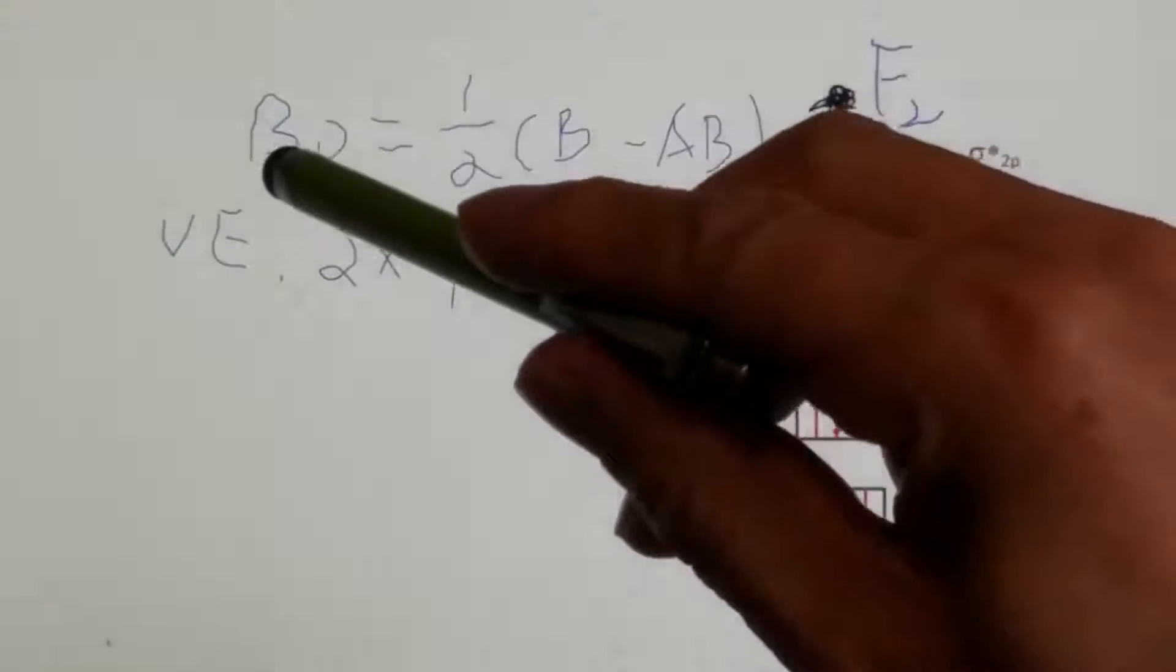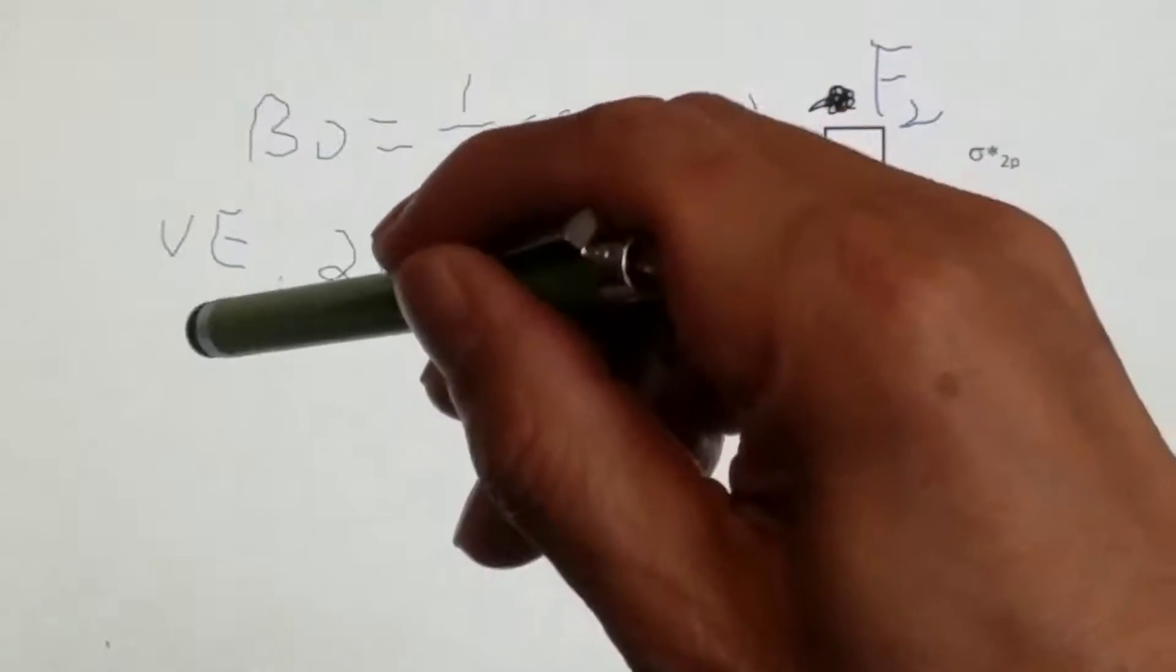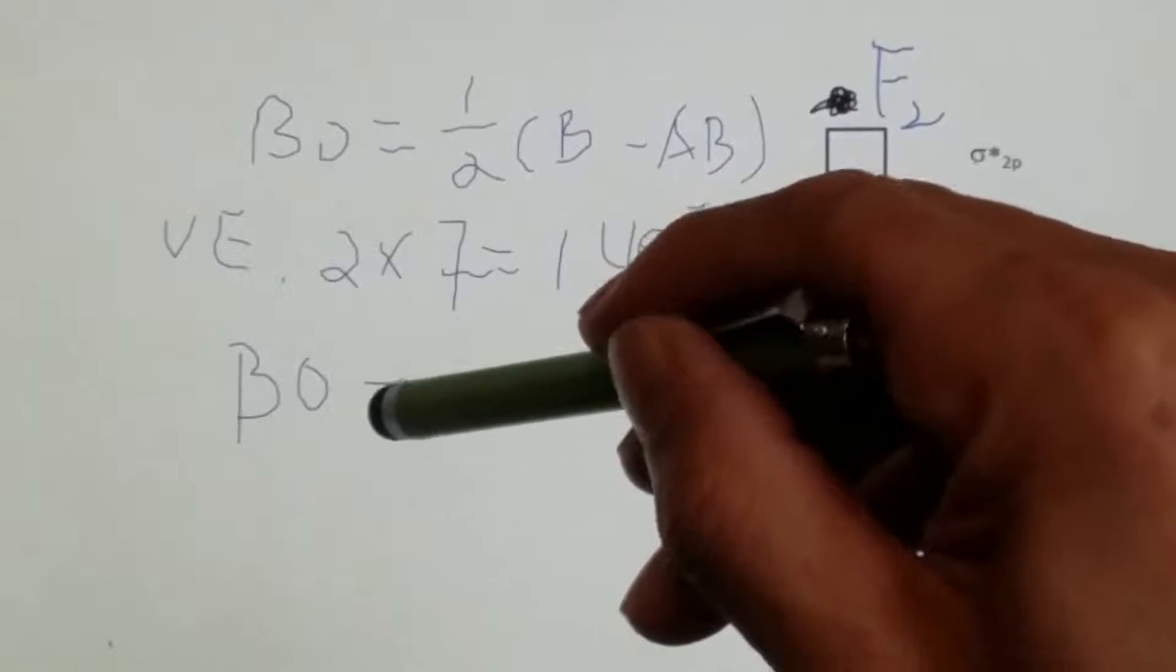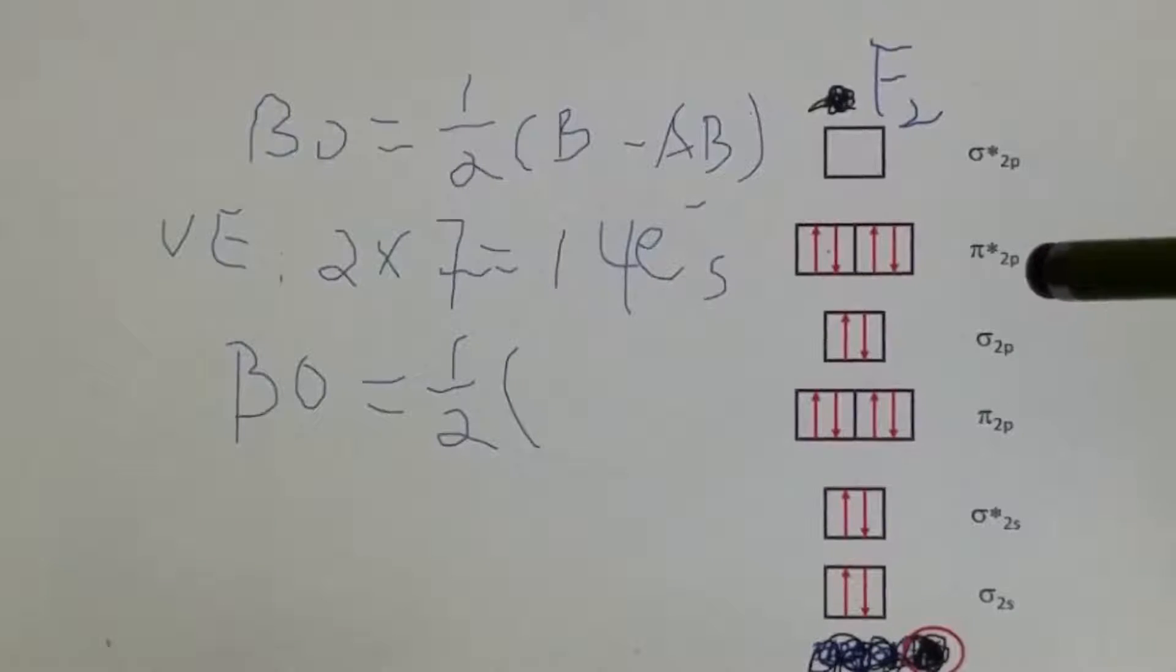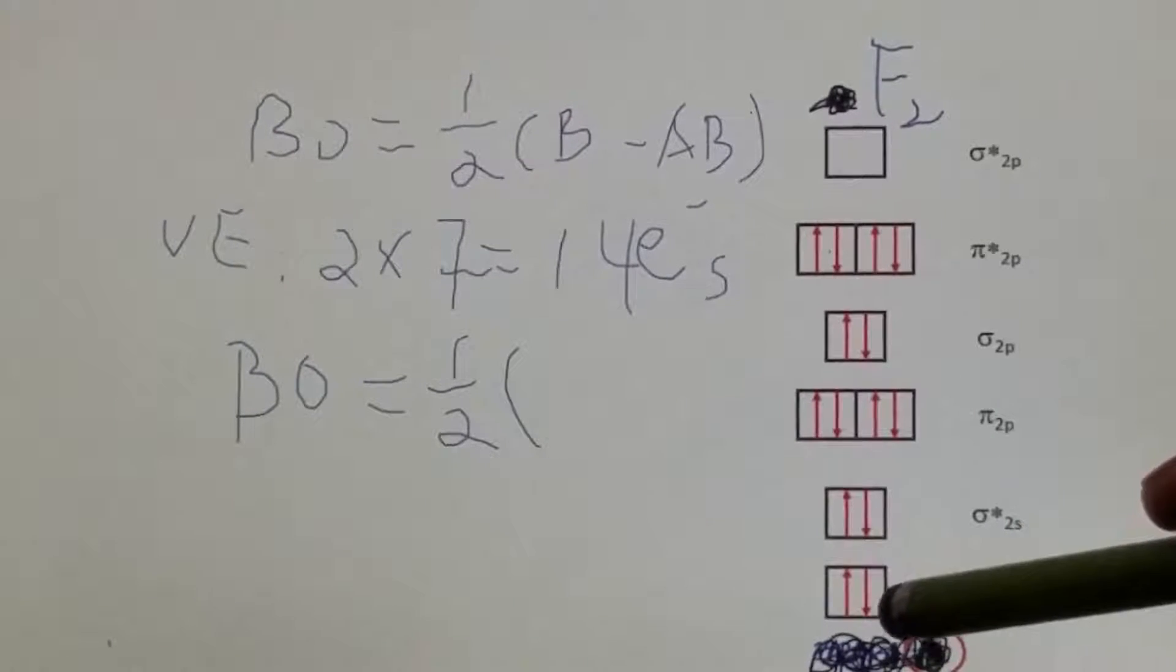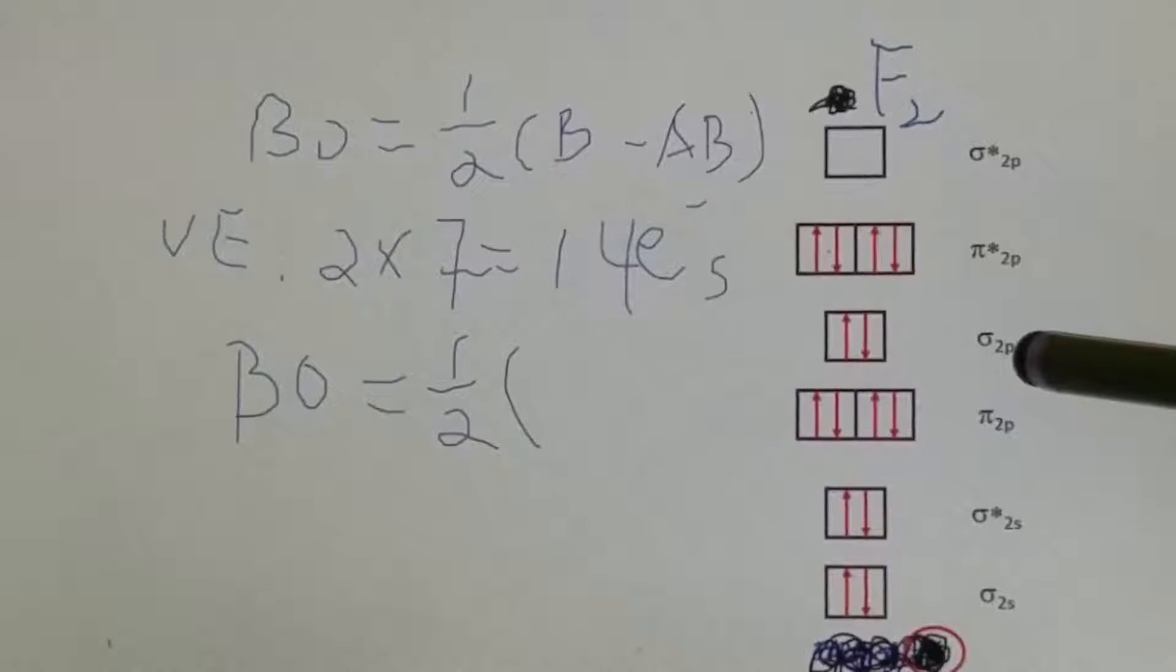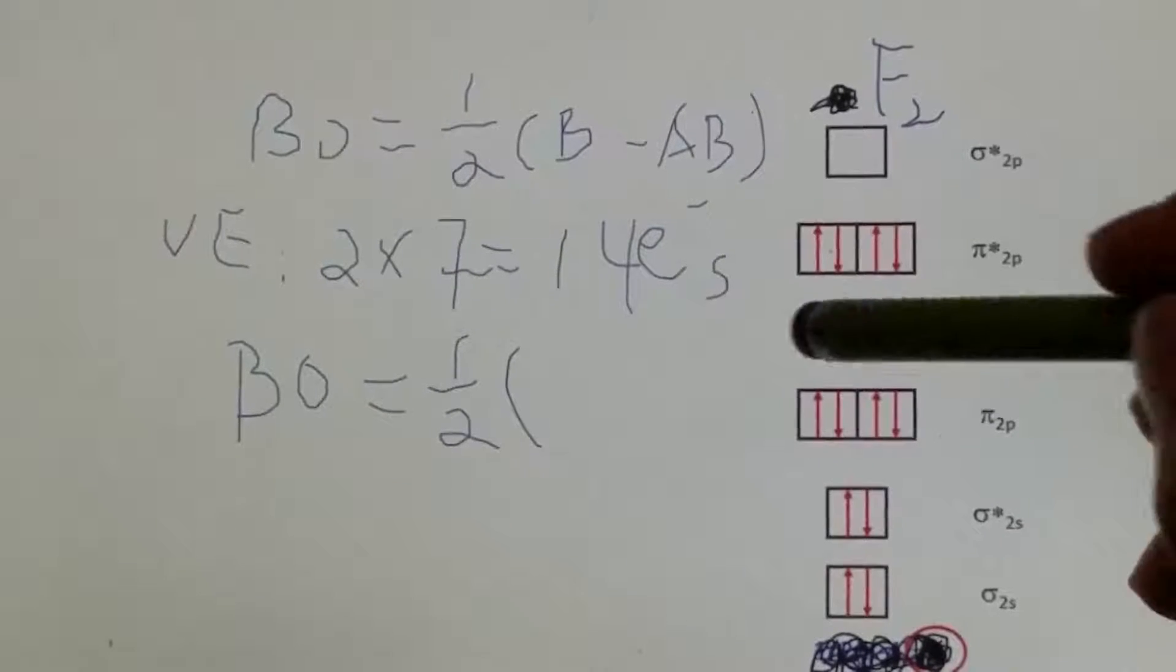Now let's look at the bond order for fluorine, F2. One half bonding: we have sigma 2s, that's 2, pi 2p, plus 4, that's 6, sigma 2p, plus 2, that's 8.